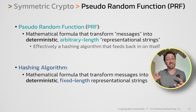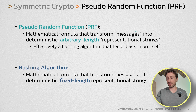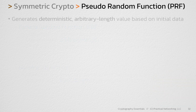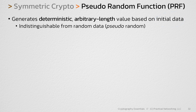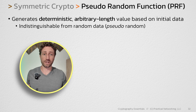Effectively, it's like a hashing algorithm that feeds back in on itself. So that's the basic definition of a PRF, but let's explore it further. Notice that 'messages' and 'representational strings' are in quotes — those aren't necessarily the best terms for what goes into and what comes out of a PRF. A PRF is a mathematical formula that generates a deterministic, arbitrary-length value based upon some sort of initial data. The output of a PRF is indistinguishable from random data — it looks just like random output, but it isn't really random. It's pseudo-random.